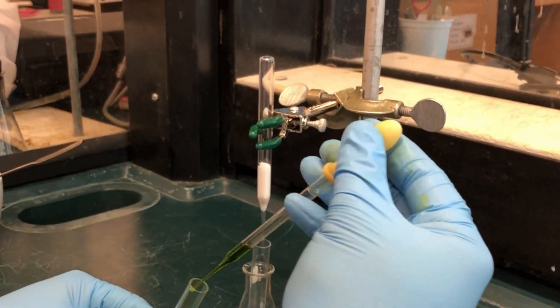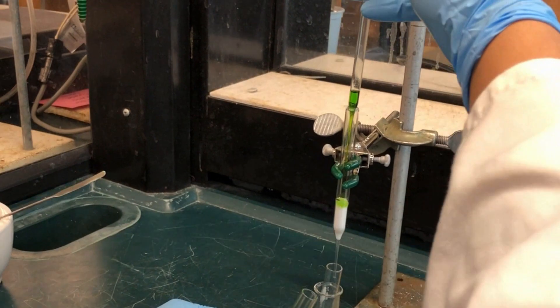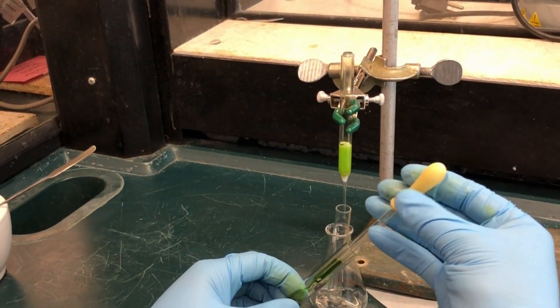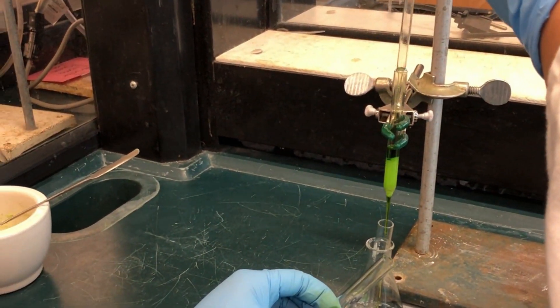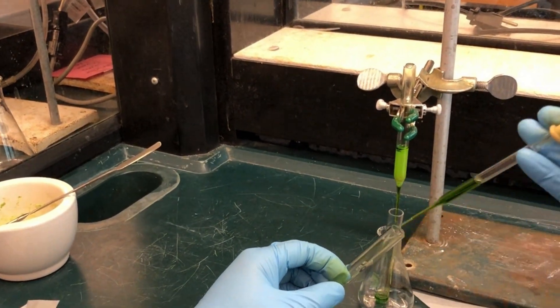Put a small test tube under the drying column. Carefully pipette the green petroleum ether layer into the top of the drying column and let it run through the sodium sulfate into the collection tube.